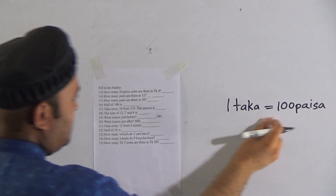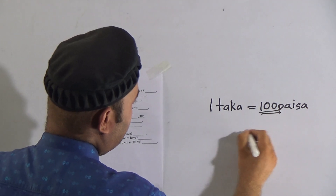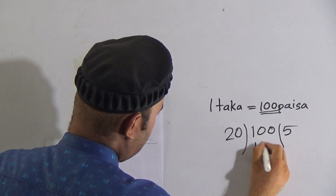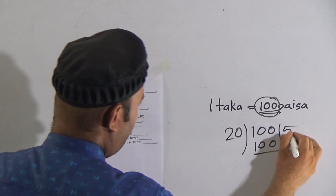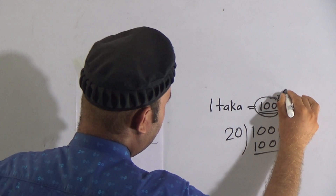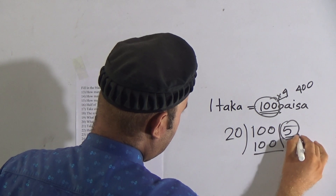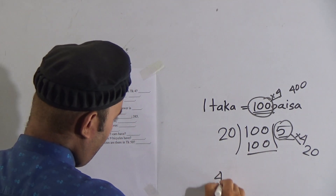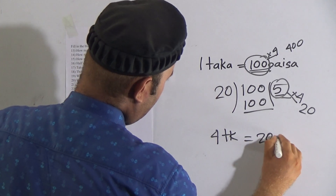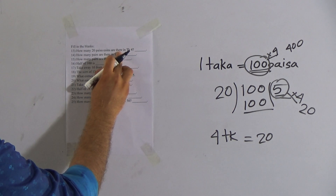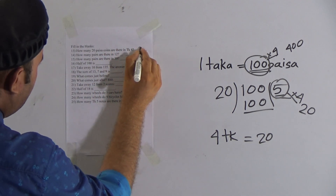1 taka is equal to 100 paisa. In 100 there are five 20s, because 100 divided by 20 gives 5. So in 100 paisa there are five 20-paisa coins. In 4 taka — after multiplying by 4 — it will be 400 paisa, and 5 multiplied by 4 is 20. So in 4 taka there are 20 twenty-paisa coins. Hope you understood this one.